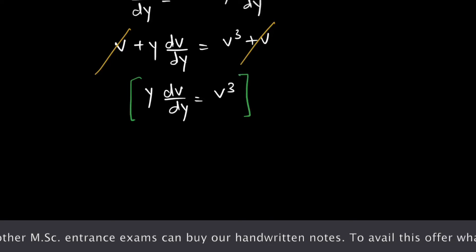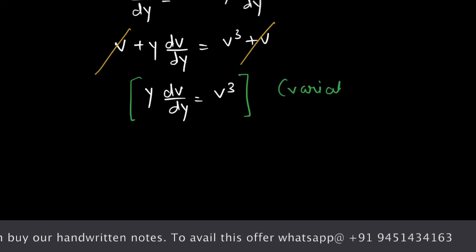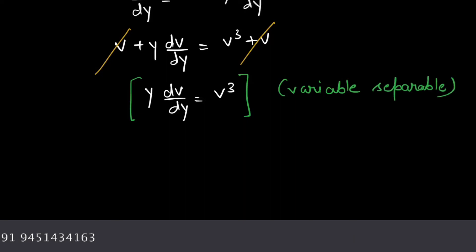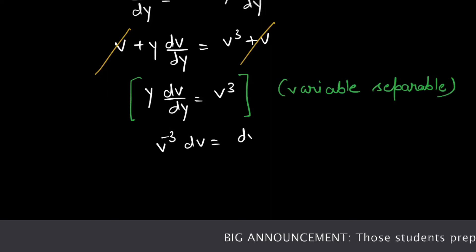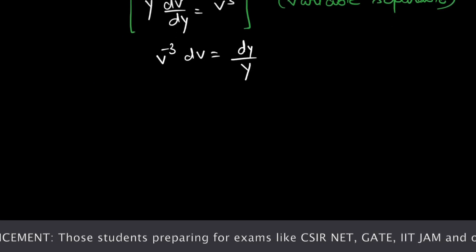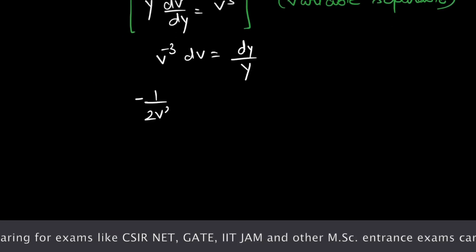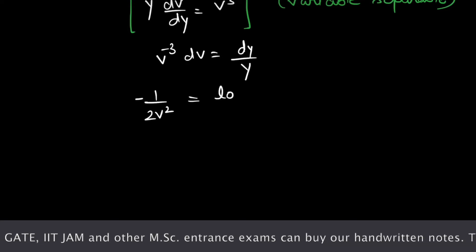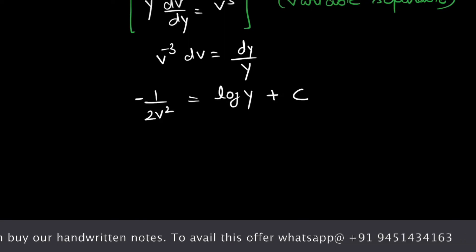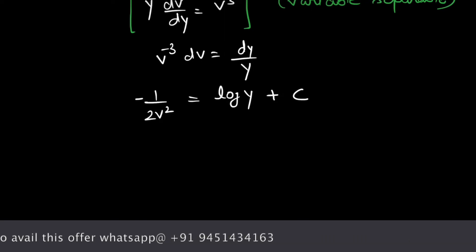This equation is a simple variable separable equation. Separating the variables, we get v raised to the power minus 3 dv equals dy over y. After integrating, we get minus 1 over 2v² equals log y plus integrating constant c.